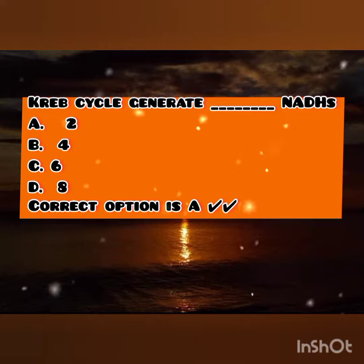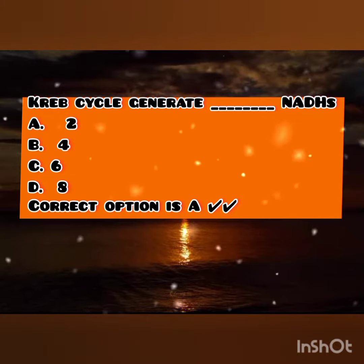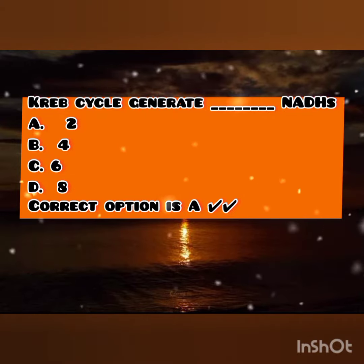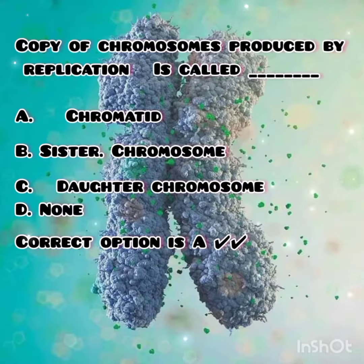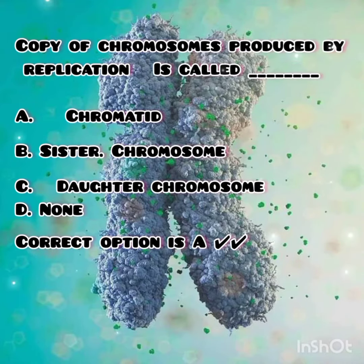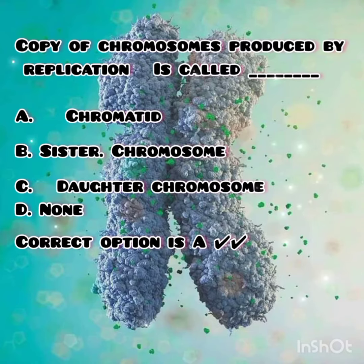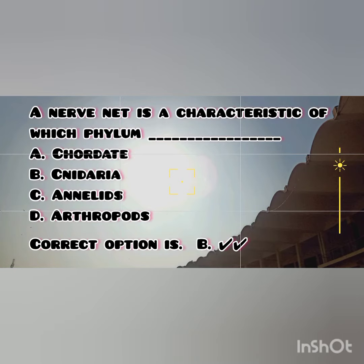The next question: copies of chromosomes produced by replication are called what? The options are chromatids, sister chromosomes, daughter chromosomes, and none of these. The correct option is A — that is chromatids.